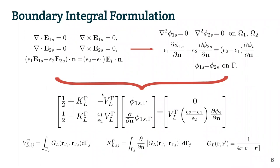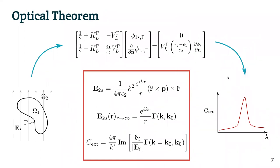We will transform our potentials in terms of the Green functions and the derivative of the Green functions. How do we go from solving for the potential to getting the extinction curves that give us the information? We solve the potential using boundary element methods and our boundary integral approach. Once we solve for the potential, we can compute the dipole moment p, which allows us to compute the scattered electric field in the surroundings. The scattered electric field, when r tends to infinity — in the far field — is connected with the forward scattering amplitude, which is what we need to compute the extinction cross-section. So the optical theorem allows us to connect our potential solution to the extinction cross-section.